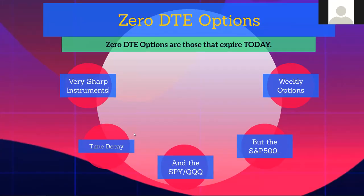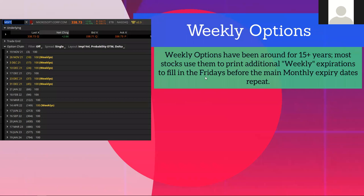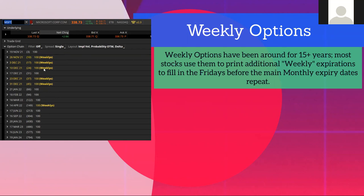Let's talk about zero DTE options — what are they? These are options that expire today. Weekly options have been around since about 2005, originally through the SPX, and then became more pervasive throughout the equities market. Typically we see options expiring each Friday — here's one that expires on Microsoft for next Friday, and the week after that. Most equities have these weekly options, which is great because you used to only have monthly options.